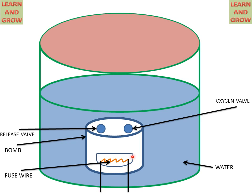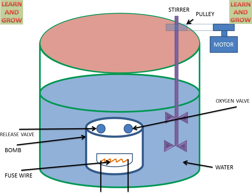These are two cables which are connected to the battery for supplying current to this fuse wire. This is a stirrer. This will help to maintain the temperature of the water at the desired point. This is connected to a motor with the help of a pulley.